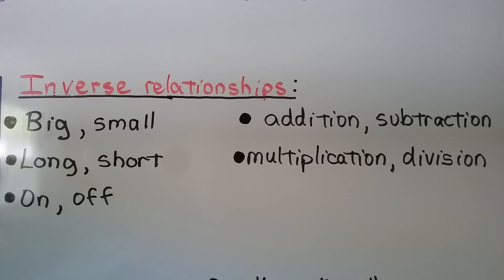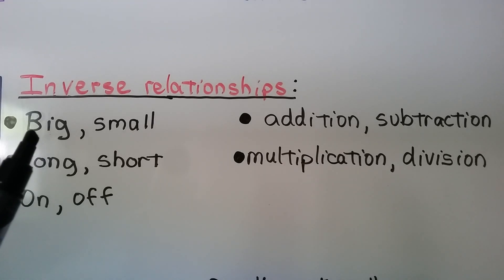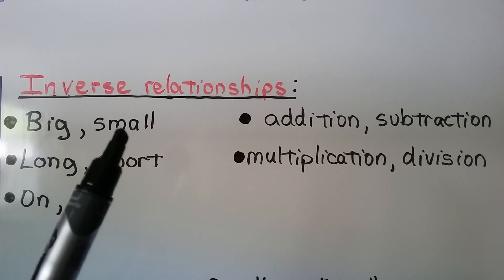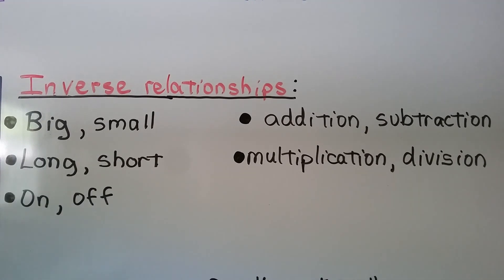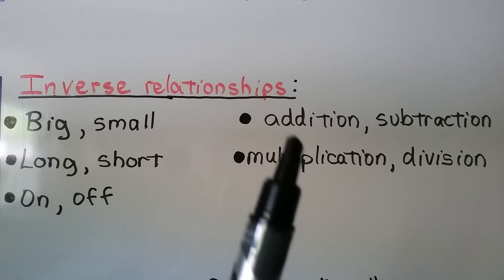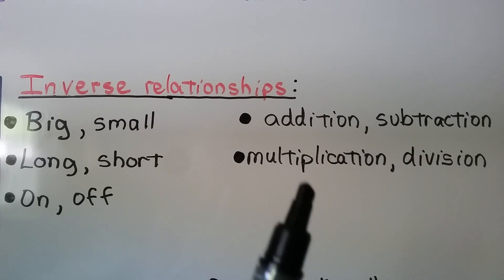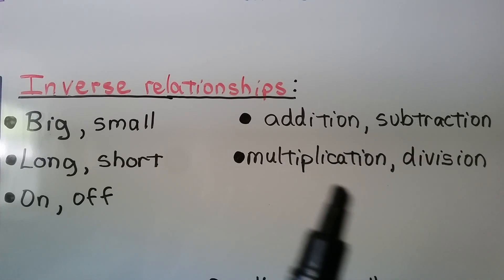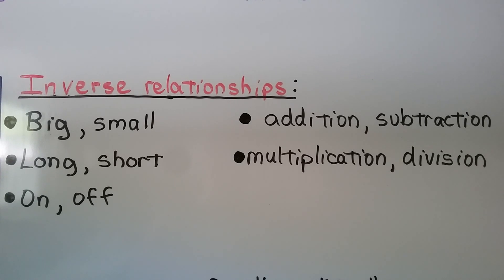Inverse relationships are opposites. Big and small — that's an inverse relationship; they're opposites. The opposite of big is small, and the opposite of small is big. Long and short are inverses of each other. On and off. In, out, arriving, leaving — those are inverse relationships. And addition and subtraction are inverses, and multiplication and division are inverses. They're opposites.